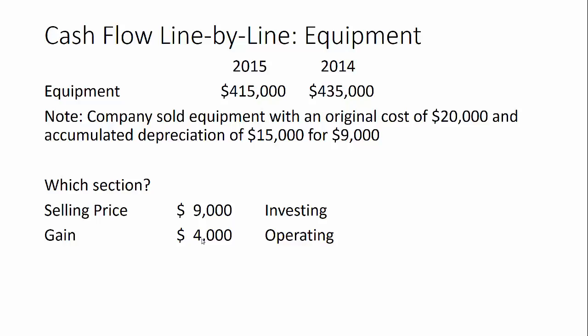That gain is factoring into our net income — it increased net income by four thousand dollars. When we're trying to create cash from operations, we need to pull this back out because it's considered a non-cash transaction. Whatever I did with it on the income statement, if it's non-cash I need to do the opposite on the cash flow statement. Since the gain increased net income, we need to subtract it back out.